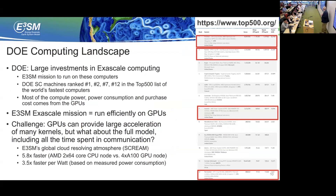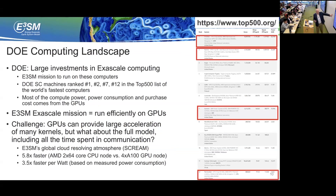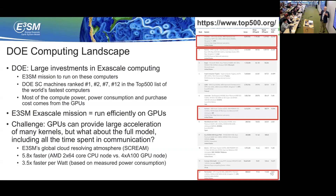On the DOE computing landscape — the top 500 list — the first two entries are the LCFs: Frontier and Aurora. DOE is a technology agency and we're supposed to make use of that technology to advance the DOE mission. The Office of Science machines occupy numbers 1, 2, 7, and 12 in the top 500. Most of the power comes from GPUs, and this was a disruptive architectural change that happened with the exascale which was not prepared for by most standard application models.